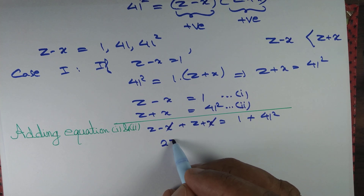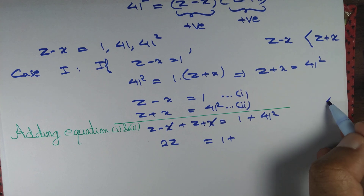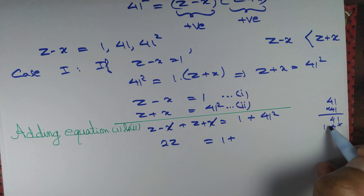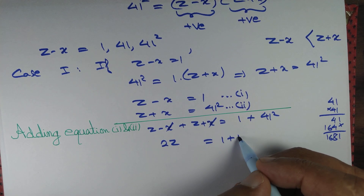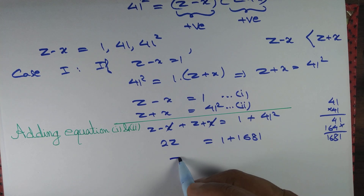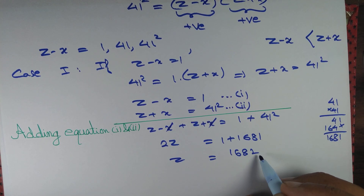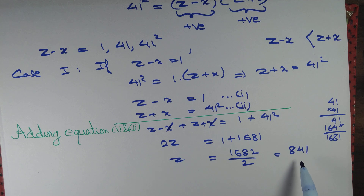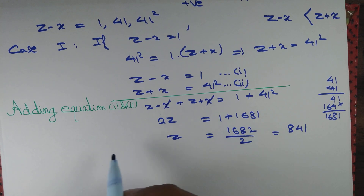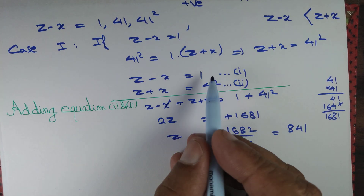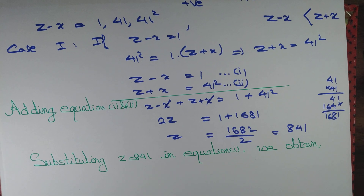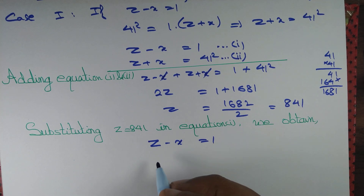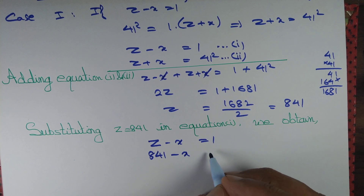The x terms cancel, so 2z equals 1 plus 41 squared. 41 squared is 1681, so 2z equals 1681 plus 1, which gives 2z equals 1682, therefore z equals 1682 divided by 2, which equals 841. So the hypotenuse of that right angle triangle must be 841 units. Substituting z equals 841 into equation 1: z minus x equals 1 becomes 841 minus x equals 1.